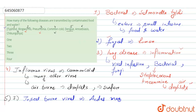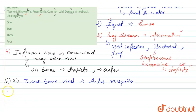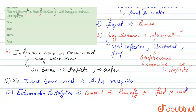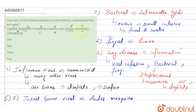Next is amoebiasis. This disease is caused by a parasite called Entamoeba histolytica. The disease is mainly transmitted by the housefly, which then contaminates food and water. So we can say that amoebiasis spreads by contamination of food and water, making it a correct answer.